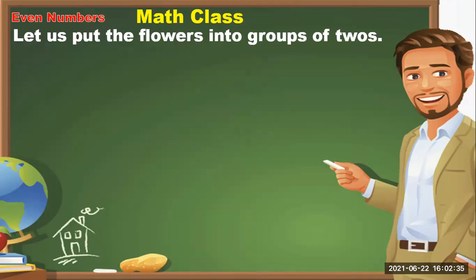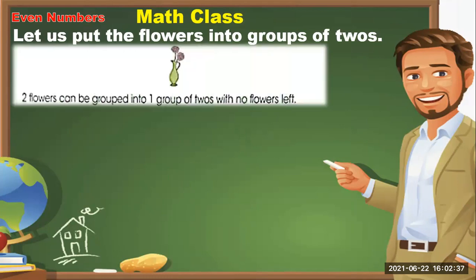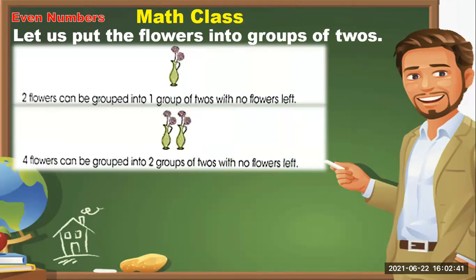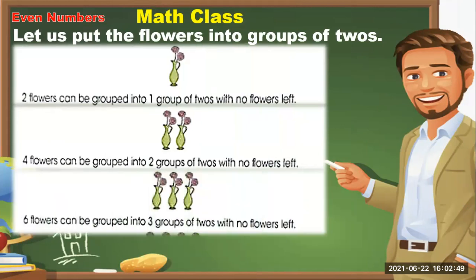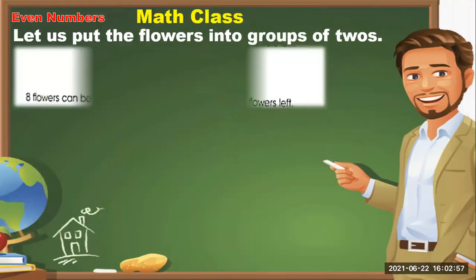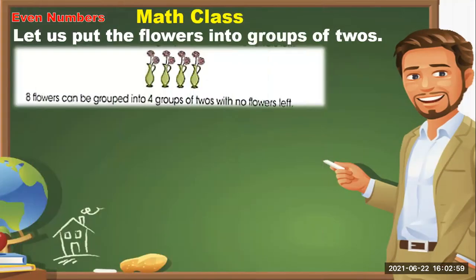Now, even numbers. Let us put the flowers into groups of twos. Two flowers can be grouped into one group of twos with no flowers left. Six flowers can be grouped into three groups of twos with no flowers left. Eight flowers can be grouped into four groups of twos with no flowers left.